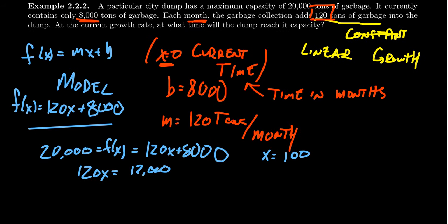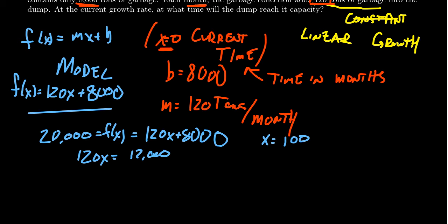x = 100 here. So this means that in 100 months, we expect that our dump to be reaching capacity or very close to it. Again, this is just an estimate. We can't expect perfect 120 tons each month, but this is an estimate.